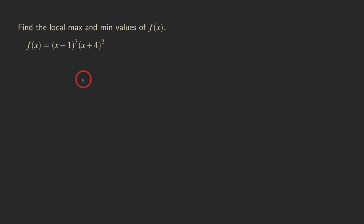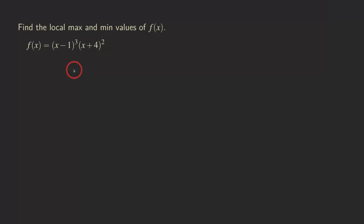Hello everyone, it's Wilson here. Today I want to talk about this problem where we have a function that's a polynomial function in factor form, and we want to find the local maximum and minimum values for this function. The usual way is to find the critical numbers and then classify them using the first derivative test. To use the first derivative test, we need to construct a sign analysis chart to see where the function is increasing and decreasing.